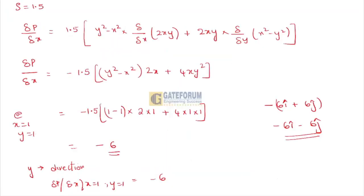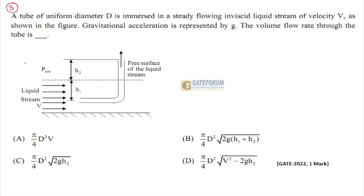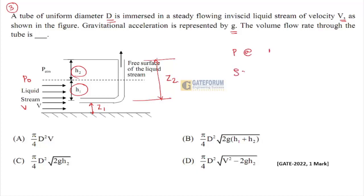Moving to the next question: a tube of diameter d is immersed in a steady flow inviscid liquid stream of velocity v. Gravitational acceleration is represented by g. Find the volume flow rate through the tube. The free body diagram shows heights h1 and h2, with pressure at the stream surface p0 and velocity v.